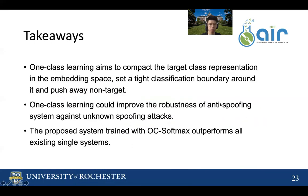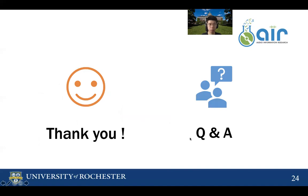For our conclusion, the takeaways are: one-class learning aims to compact the target class representation in the embedding space, set a tight classification boundary around it, and push away non-targets. Our one-class learning improves the robustness of the anti-spoofing system against unknown spoofing attacks, and our proposed system trained with OC softmax outperforms all existing single systems. That's it for my presentation. Thank you everyone — if you have any questions, feel free to send me an email.